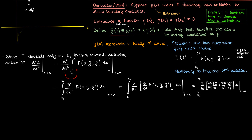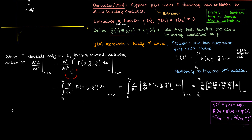Now we want to find the partials of y-bar and y-bar-prime with respect to ε. Using the expression y-bar = y + ε·η, the derivative y-bar-prime is y'(x) + ε·η'(x). Taking the partial derivatives of these expressions with respect to ε, we end up with η and η' respectively, where η is the function that creates the variation from the stationary function y. If we now plug in these partials into our second variation, here's what we end up with.